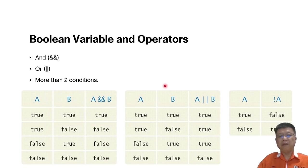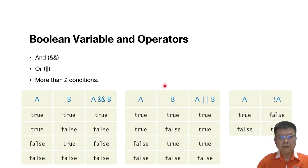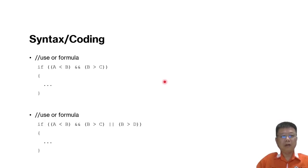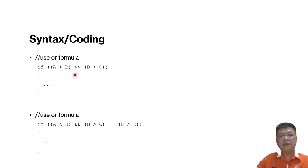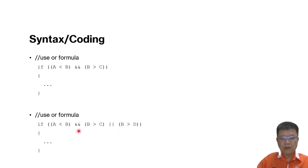We can use these operators in programming to combine two conditions. For example, if variable A is smaller than B AND variable B is larger than C, and we want both conditions to be true, we use the AND operator to combine them. We can also combine conditions using OR.